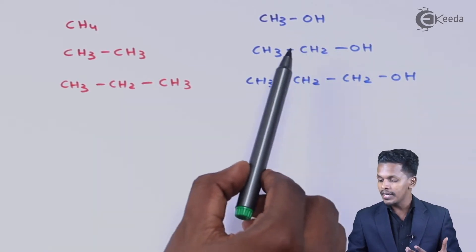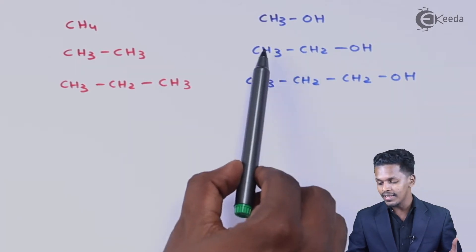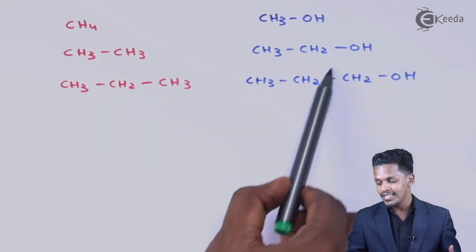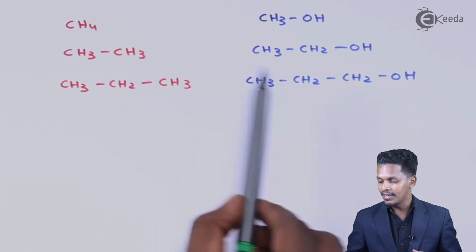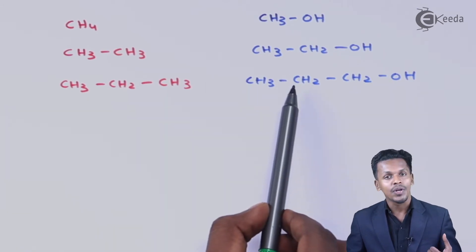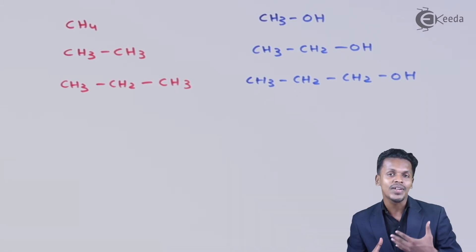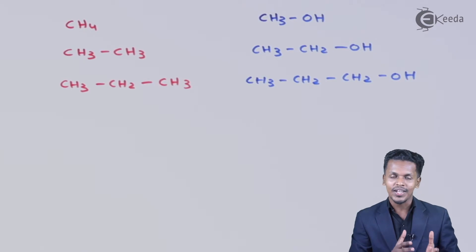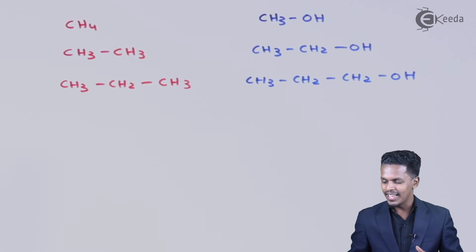Similarly, ethanol and propanol share CH3CH2 and the OH group in common, but propanol has one extra CH2 group compared to ethanol. This CH2 group keeps increasing as we go from a lower member to a higher member of the particular organic compound series, and that is what they are known as — a homologous series.